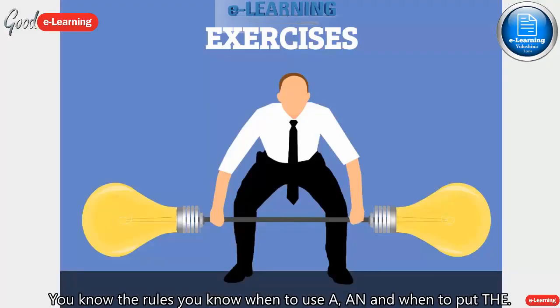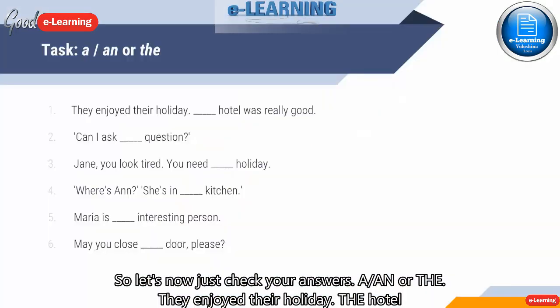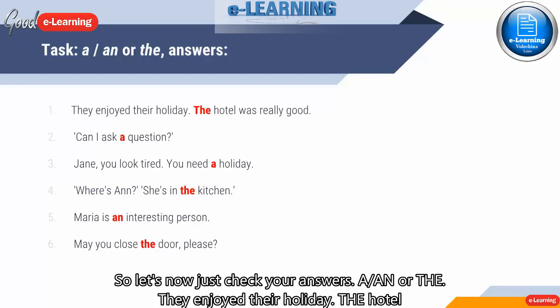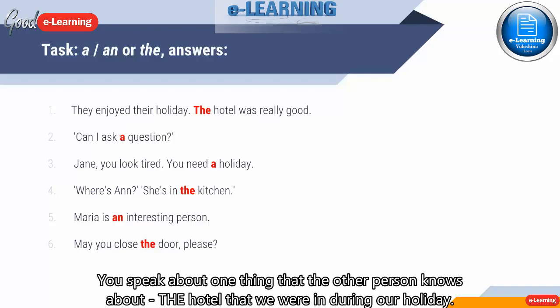You know the rules, you know when to use 'a' and 'an' and when to put 'the'. So let's now just check your answers. They enjoyed their holiday. The hotel was really good. The - here you need to put 'the' because you speak about the holiday, right? So they enjoyed the hotel during the holiday. That's it. You speak about one thing that the other person knows about.